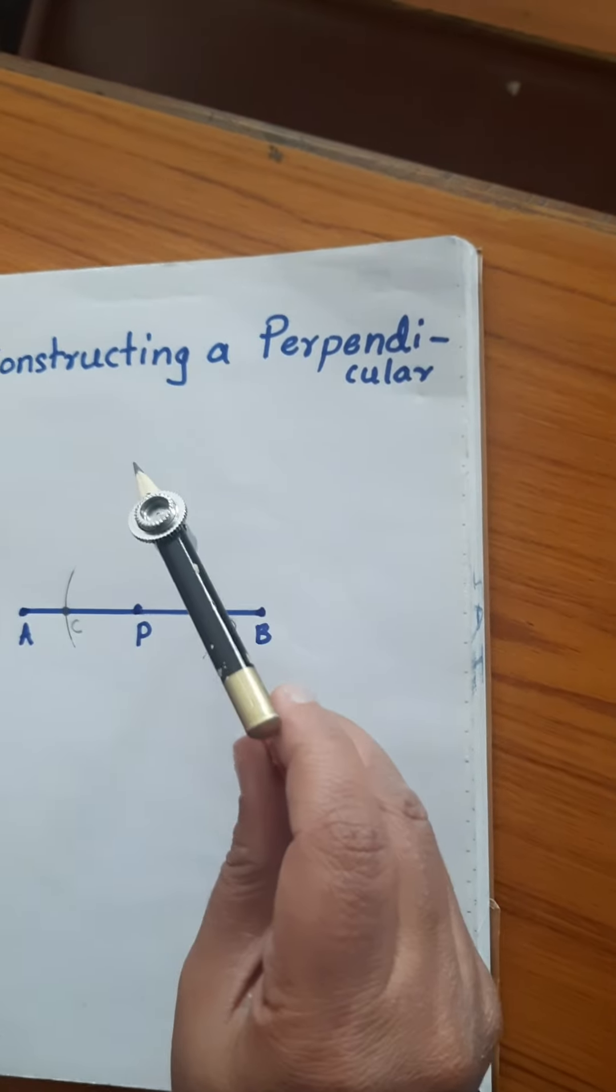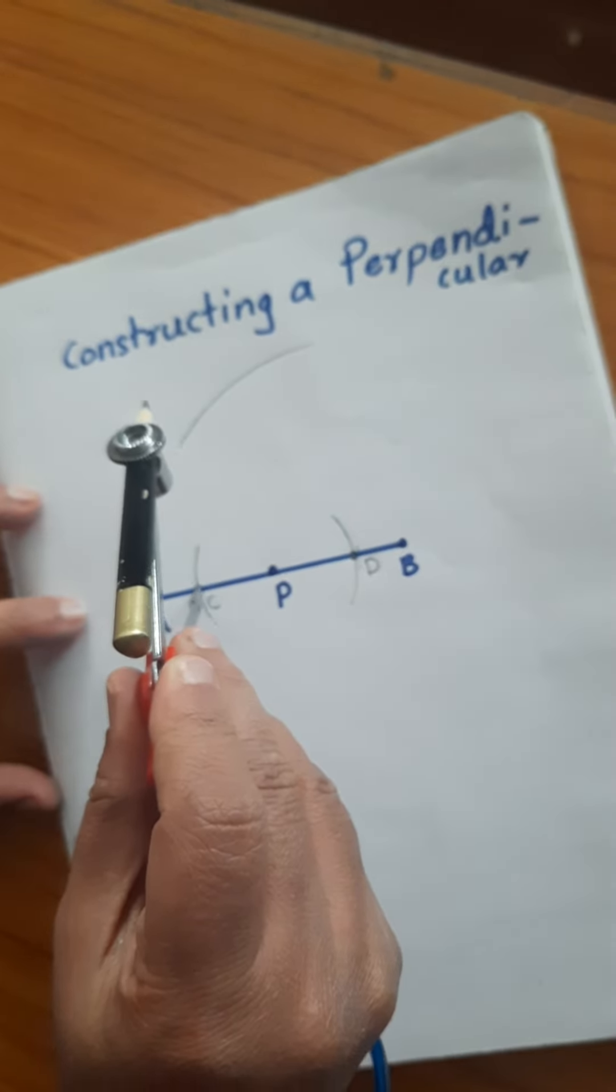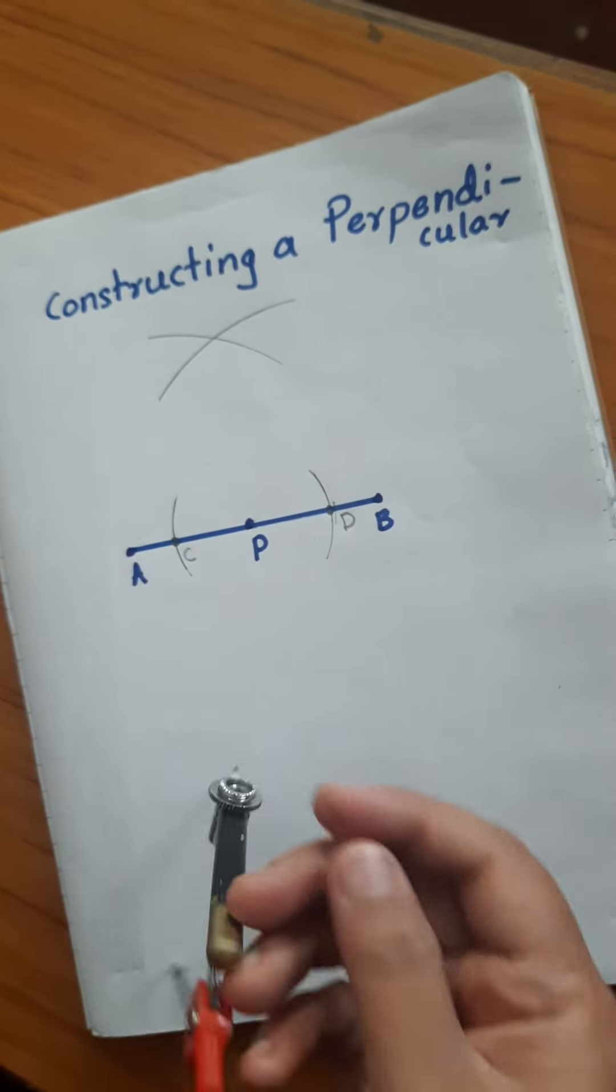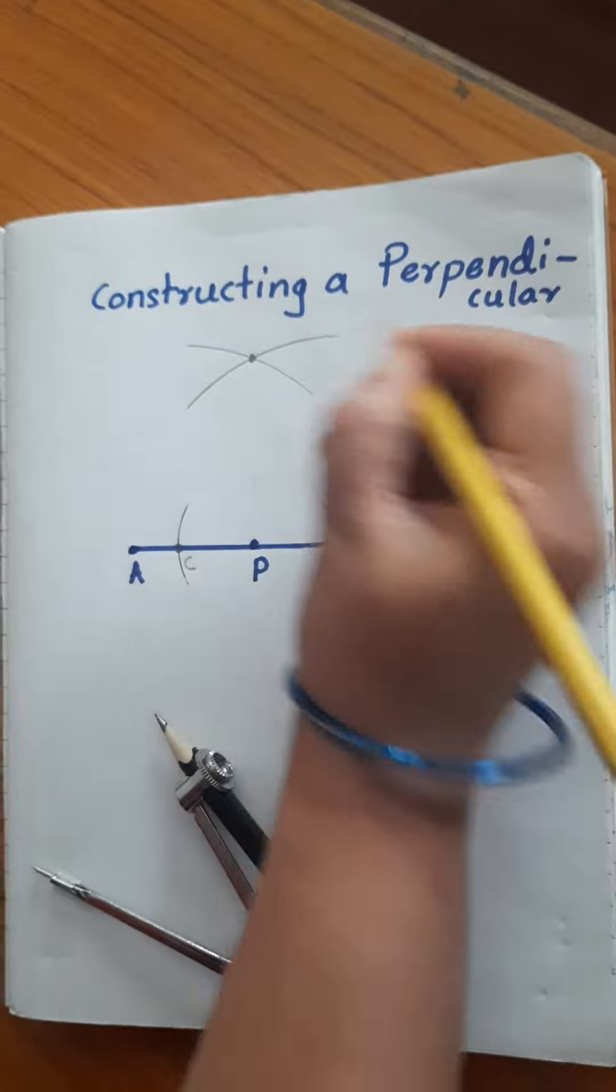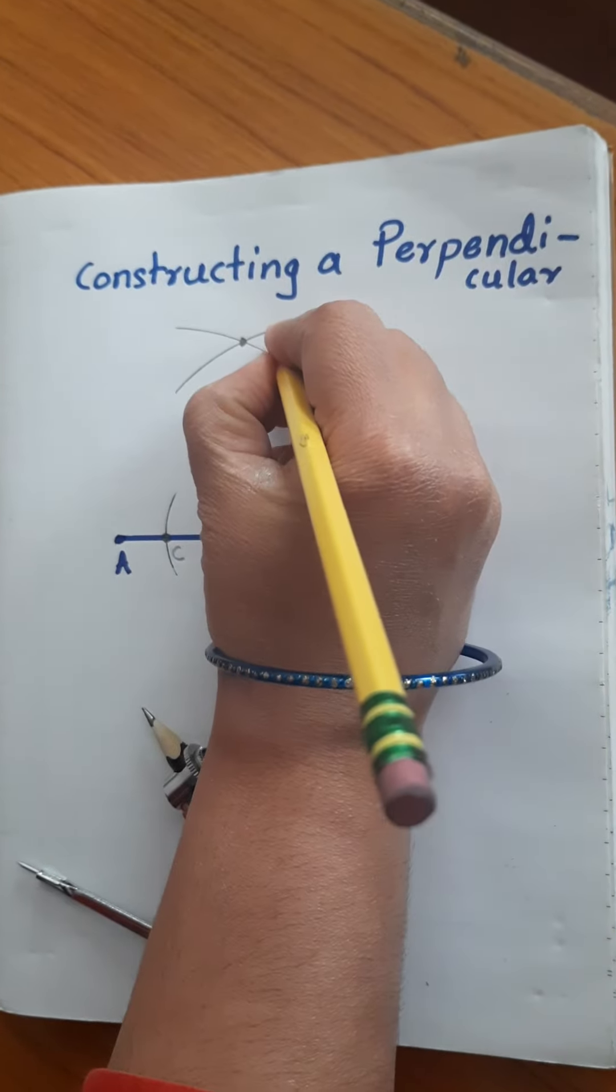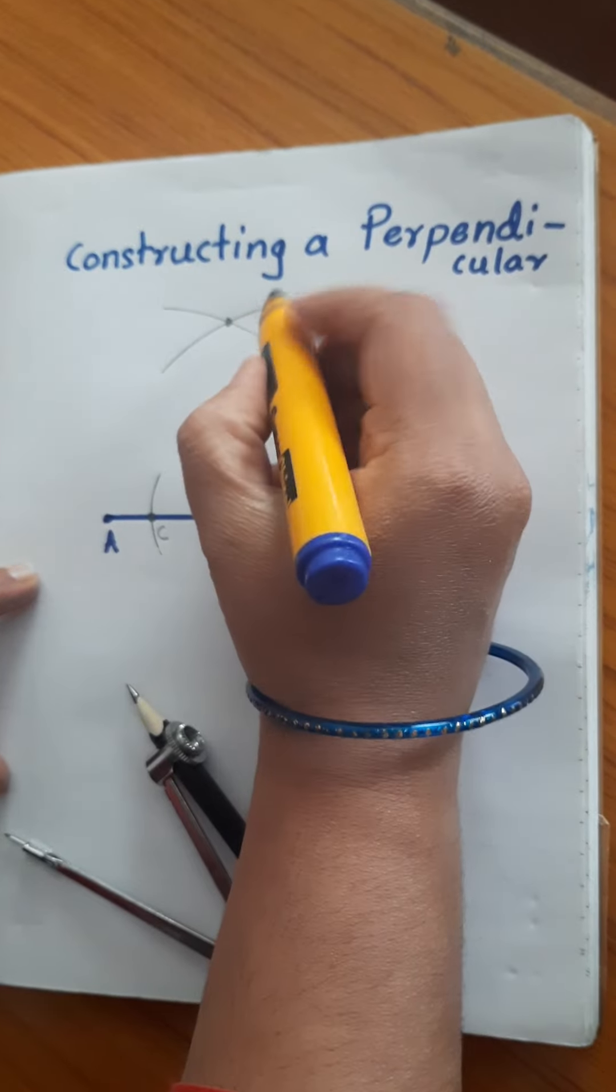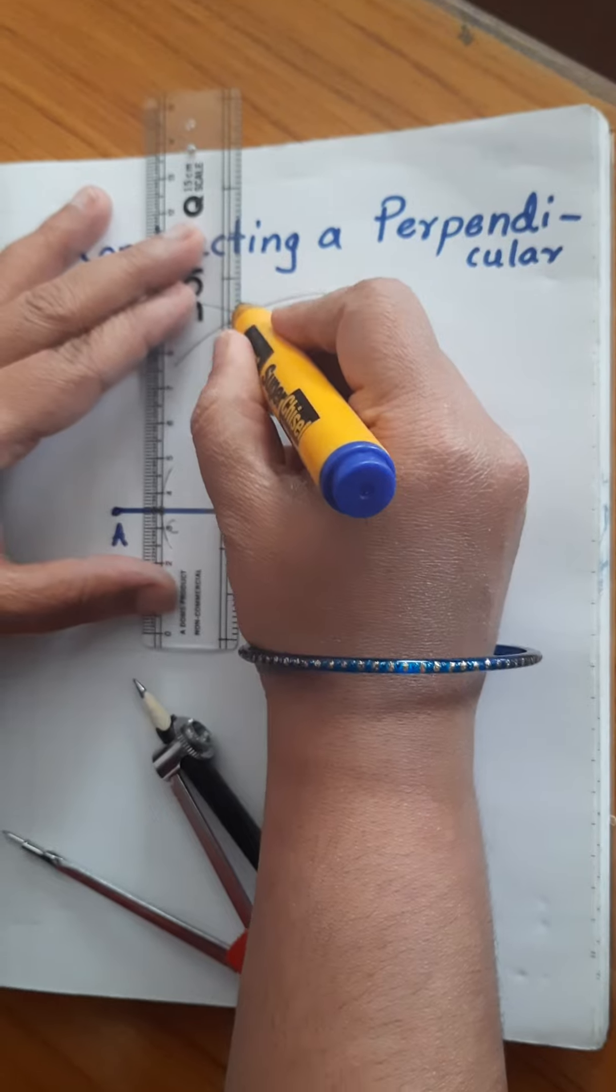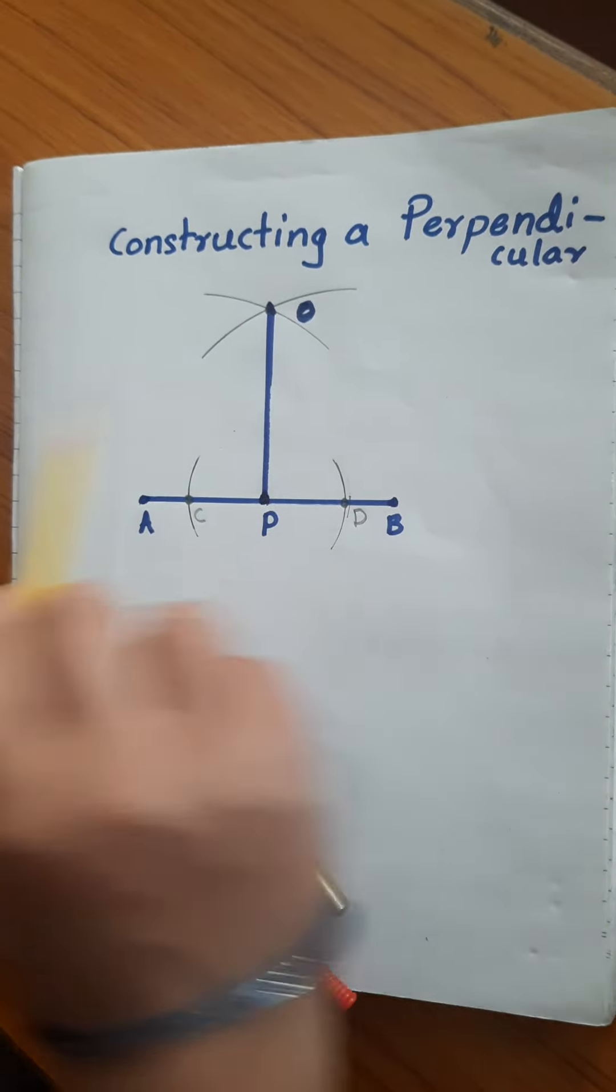Next, widen the arms of the compass. From the D point draw one arc and from the C point cut the previous arc, and we will form a point. Name it O or anything as per your wish.